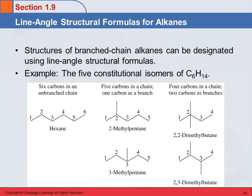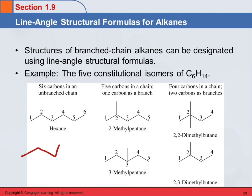We can also look at branched chain alkanes. This is an unbranched chain for hexane — there are six carbons. You have to remember to count the end: it's not the number of lines that equals the number of carbons, it's the ends. When I draw these, I count like this — if I was going to draw hexane, I'd put my pen down and count: one, two, three, four, five, six. You have to remember to count the starting point.